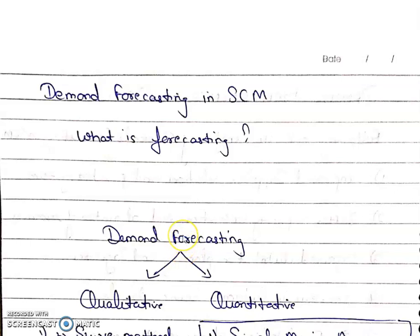Hello students, today we are going to discuss unit 4th topic: demand forecasting in supply chain management. The first question which comes in our mind is: what is forecasting? Forecasting is simply the prediction or estimation of future events.